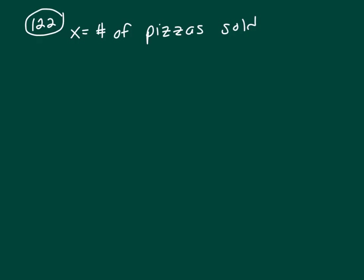I'm going to let X be the number of pizzas sold, and as I read the problem, I'm going to write equations. At a certain pizzeria, one-eighth of the pizzas sold in one week were mushroom. So that means mushroom is going to be 1/8 X.